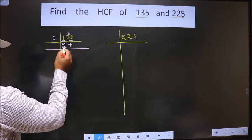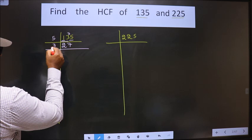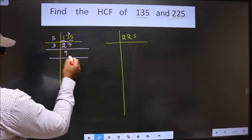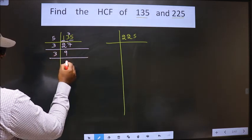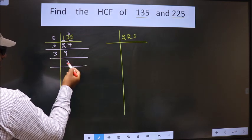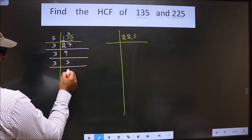Next, here we have 27. 27 is nothing but 3 times 9 is 27. 9 is nothing but 3 times 3. 3 is a prime number, so we take 3 and 1.